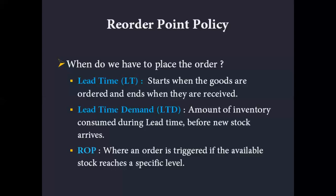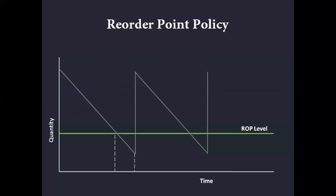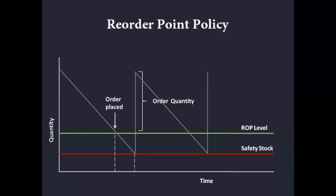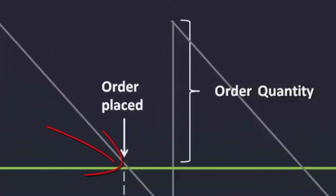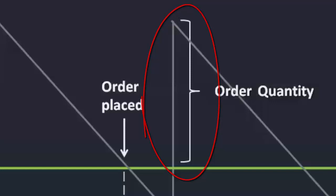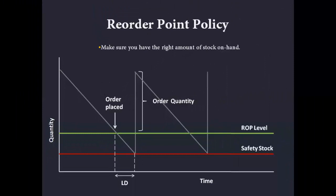Looking at it graphically, Q is the amount we start with, and as we consume it we reach the predetermined reorder level. When stock reaches this point we place the order; one supplier lead time later the order is delivered. We have predetermined the reorder quantity and stock moves up from this level, then the cycle repeats itself — when it reaches the reorder point again, the next order is placed to replenish inventories.